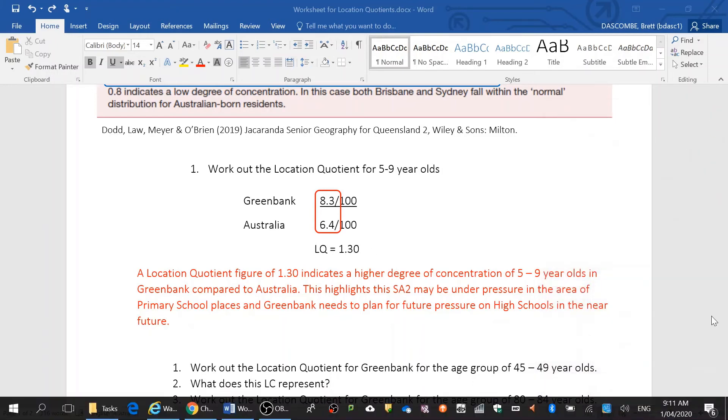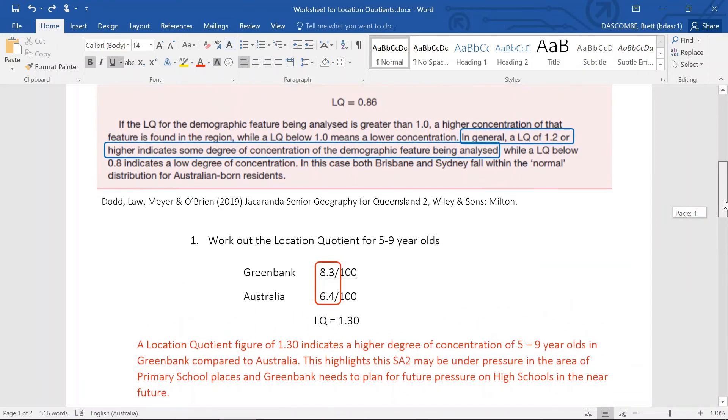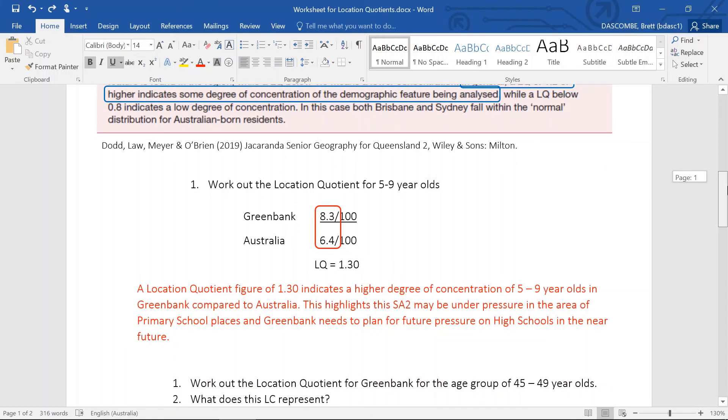Now if we go back up, we can see that that location quotient of 1.2 or higher indicates some degree of concentration. So with a location quotient of 1.30, you would suggest that a location quotient figure of 1.3 indicates a higher degree of concentration of 5 to 9 year olds in Greenbank compared to Australia. This highlights this SA2 is under pressure in the area of primary school places, and Greenbank needs to plan for future pressure on high schools in the near future.